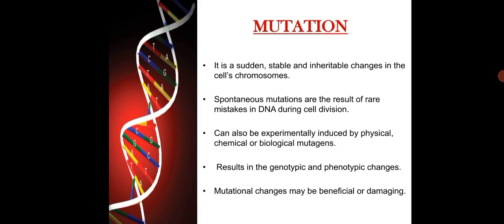Mutation is the sudden, stable, and inheritable change in the cell's chromosome. Mutations can either be caused spontaneously or can be induced. Spontaneous mutations result from rare mistakes in DNA during cell division. Mutations can also be experimentally induced by physical, chemical, or biological mutagens. Mutations result in genotypic and phenotypic changes, which may be beneficial or damaging.